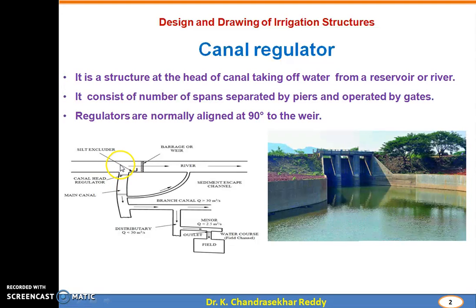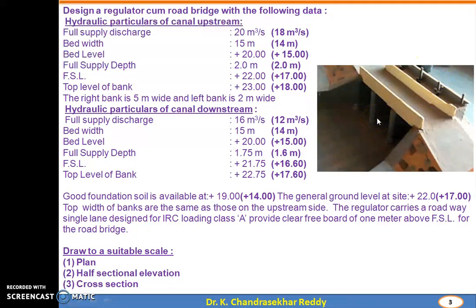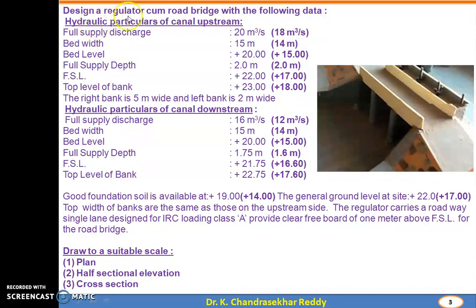Here we will regulate the flow entering into the networking of the canals. This is the model. Usually, this is the road path, in addition to that an operating platform. All these structures are constructed in a rural area and will be linked with the road — your rural road and parking platform. These are the piers; in between them the water will be flowing.